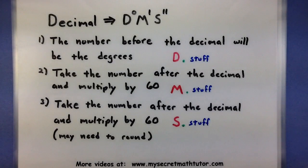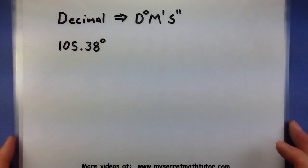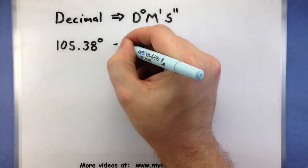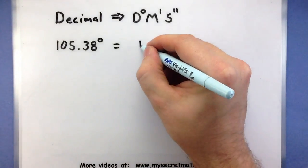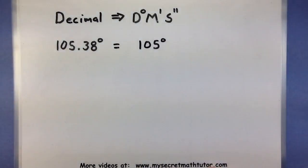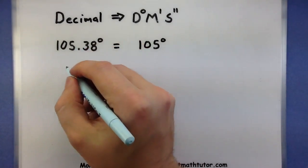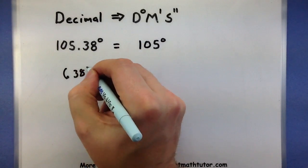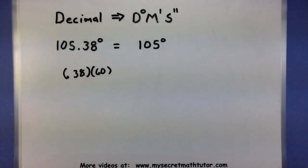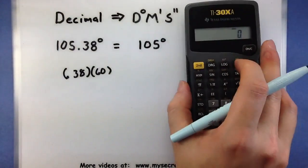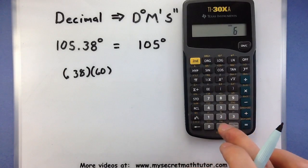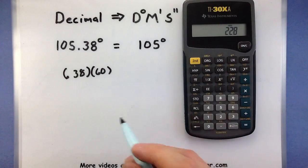Let's see this process in action. Here I have 105.38 degrees. So the first thing I'm going to do is take the 105 and call that my degrees. With the part after the decimal, I'm going to multiply this by 60, 22.8.